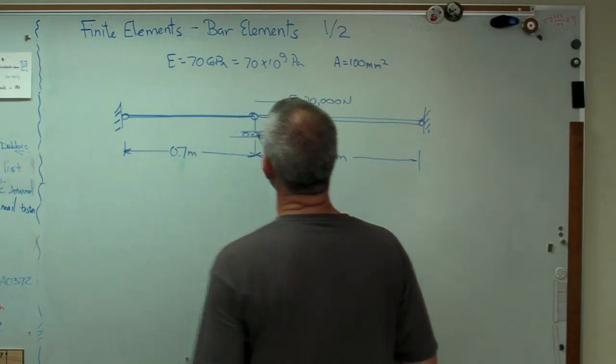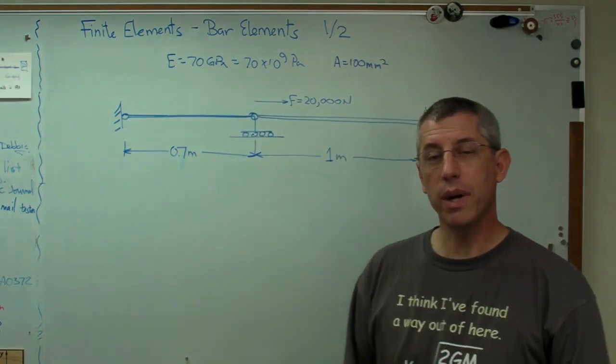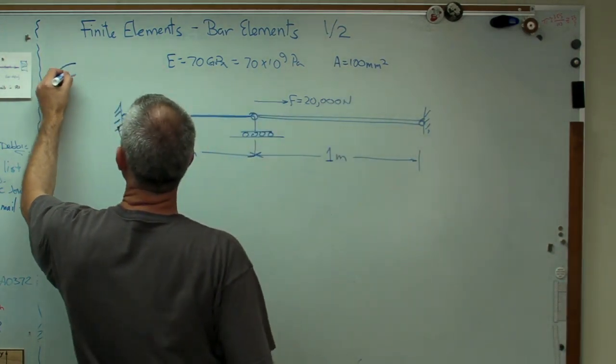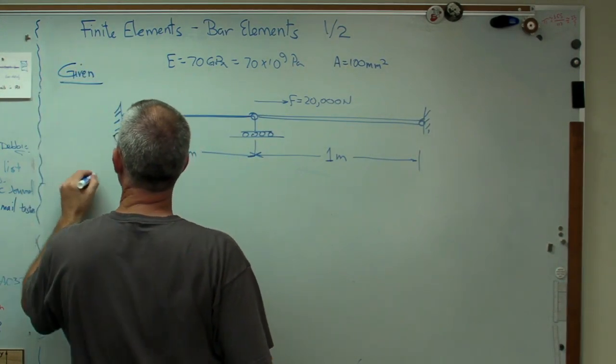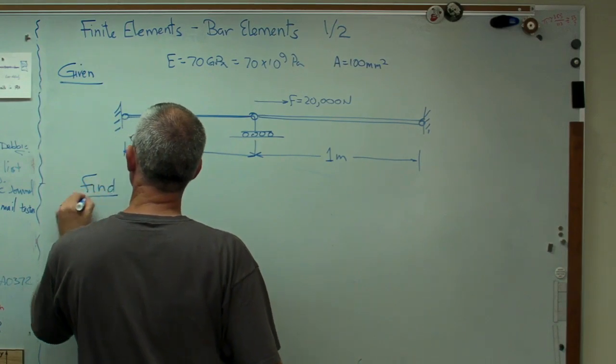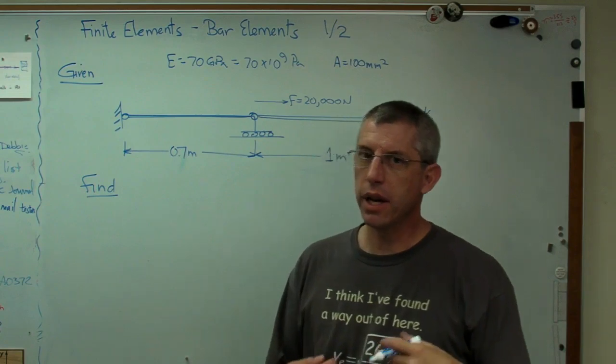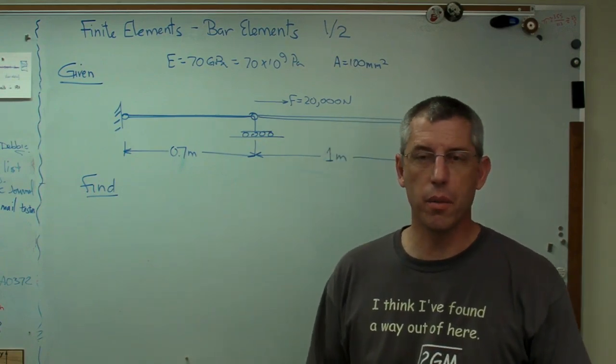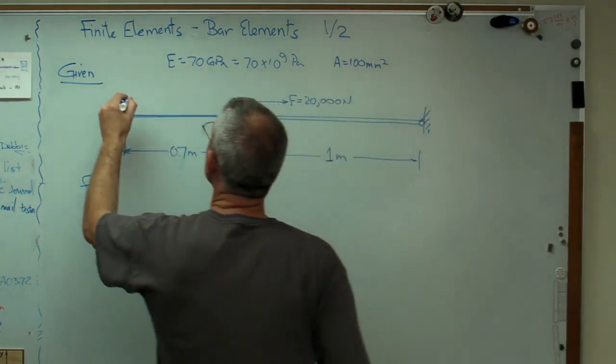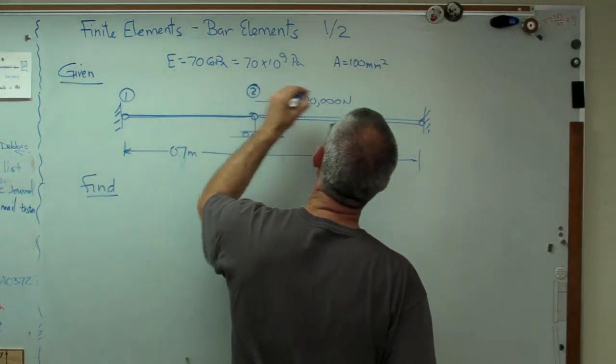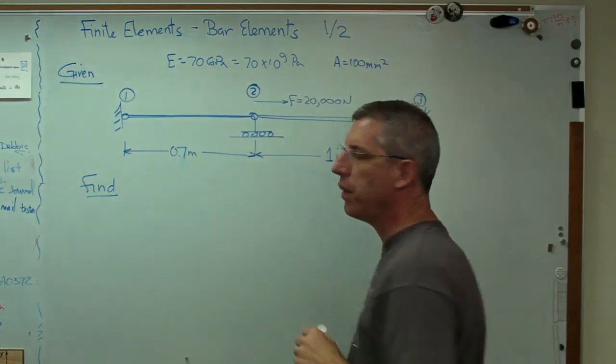There's the geometry. When I say I want to analyze this, what I really mean is given all this stuff, I want to find a displacement. Well, which displacement? In order to know that, I've got to do a little bookkeeping. Let's number the grid points first. That'll be grid point number one, grid point number two, and grid point number three.